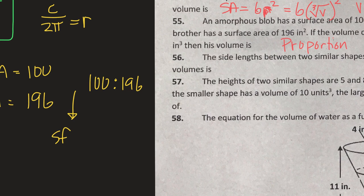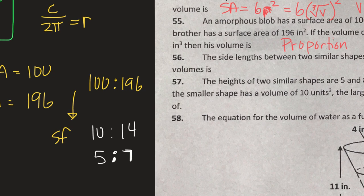I need to take my surface area ratio and change it into a scale factor. 100 to 196 is reducible. The square root of 100 is 10, the square root of 196 is 14 — your calculator can help you with that. 10 to 14 reduces to 5 to 7. You always want the scale factor in its most reduced form, because we can take our scale factor and make our volume ratio by cubing it.